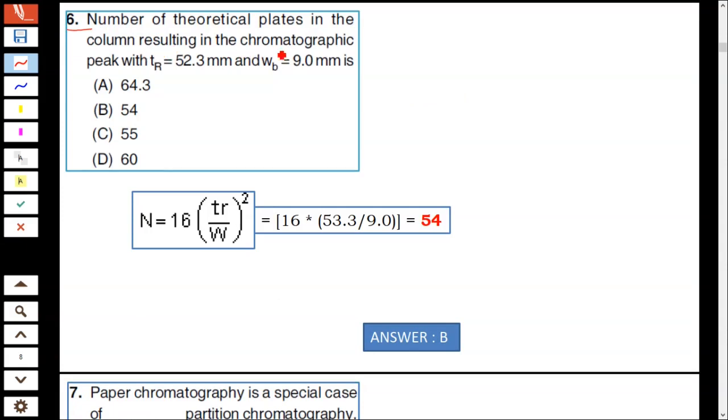Question number 6: The number of theoretical plates in the column resulting in the chromatographic peak. In gas chromatography, the number of theoretical plates was given as 16 times (tR/W)². tR is the retention time and W is the width of the column squared. Hence 16 times 52.3² divided by 9², which gives 54. Hence the answer is 54.